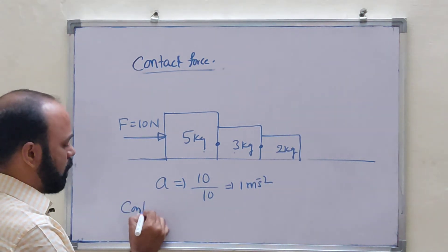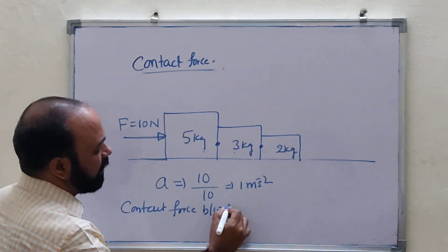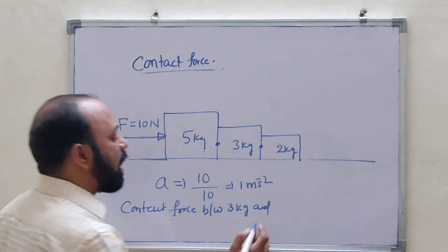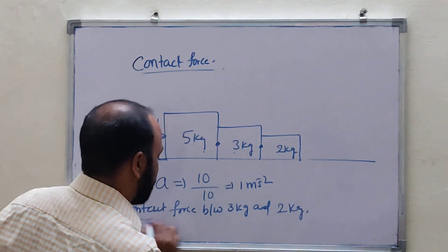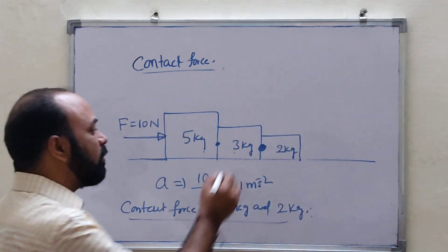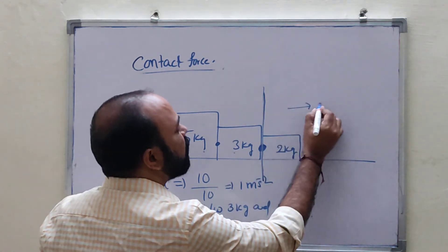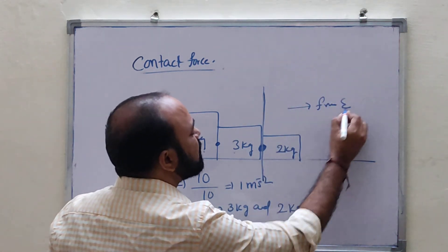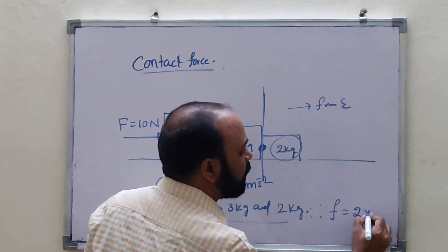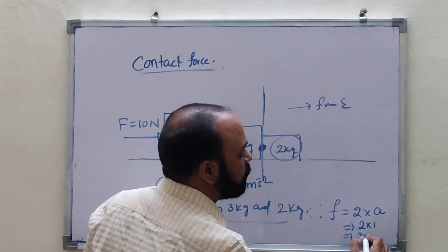Contact force between 3 kg and 2 kg: draw a line between them. The free-end side has only one block — the 2 kg block. So contact force equals 2 into acceleration of the system, which is 2 into 1, equals 2 Newtons.